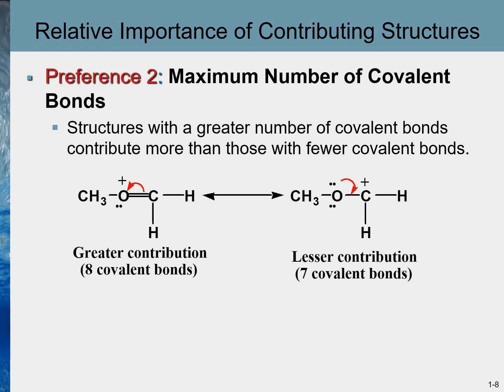The second preference is the maximum number of covalent bonds. The resonance contributing structure with more covalent bonds will contribute more. In this case, the structure on the left has eight covalent bonds while the structure on the right has seven covalent bonds. This also tells us that the left-hand side structure contributes more to the resonance hybrid.